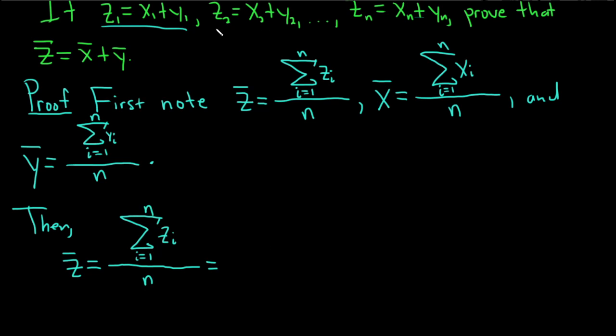So Z1 is X1 plus Y1, Z2 is X2 plus Y2, etc. So in general, Z sub i, by definition, is Xi plus Yi, and we're going from 1 to n.